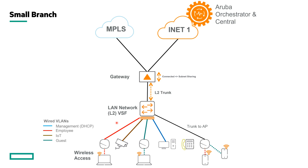Looking at the small branch, management is the same. Small branches generally have fewer circuits — this may be only an MPLS and an internet circuit, two internet circuits, or an internet circuit and an LTE circuit. For more cost-conscious, smaller branches, a single gateway may be used, and we may have a smaller switching infrastructure with only a single layer of switching.